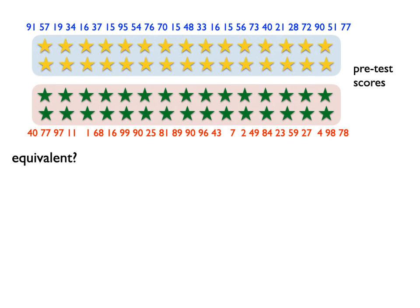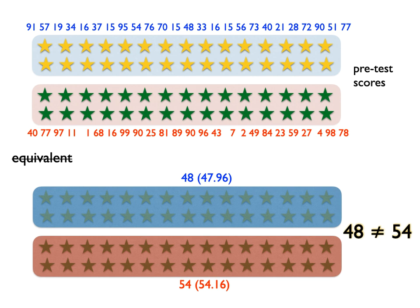Imagine two classes — we have given what we consider the most relevant pre-test. Actually these are randomly generated numbers, so there is no systematic bias in the scores assigned to the students in the conditions. The average score in one class is about 48 but in the other it is about 54. 48 is not strictly equivalent to 54. If you were appointed to a job on an annual salary of £54,000 but were only paid £48,000, you would probably not accept the argument that these two figures are equivalent. But one is seldom going to get precisely the same scores on a pre-test even with random numbers. So the question becomes: how close is close enough to be seen as equivalent?